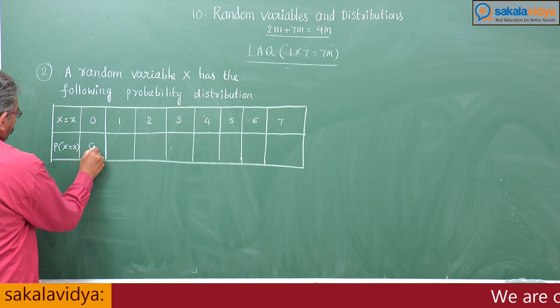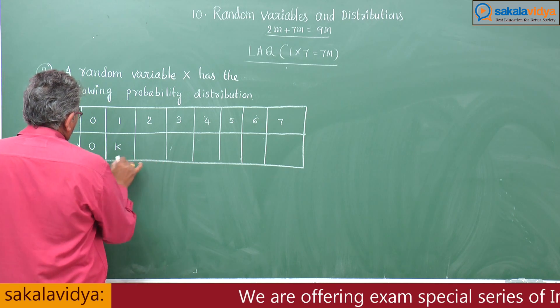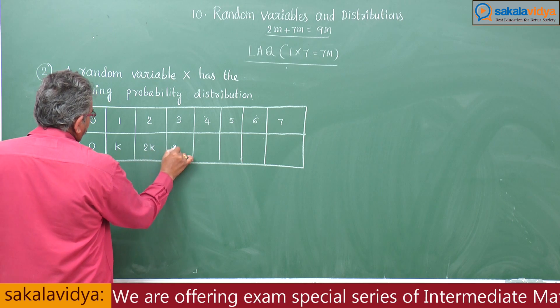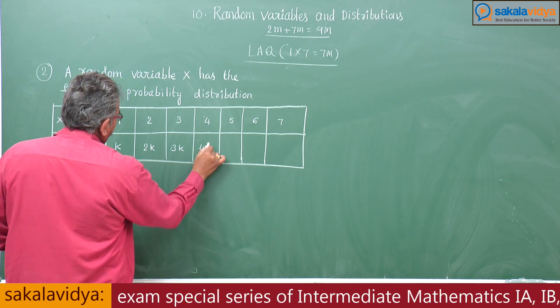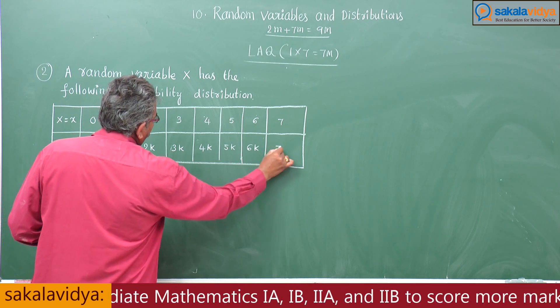The probabilities are: 0, K, 2K, 3K, 4K, 5K, 6K, and 7K given.